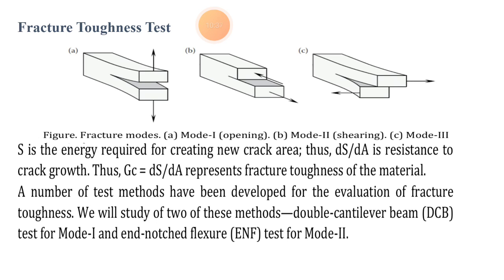We will study two of these methods: the double cantilever beam for Mode 1, and the end-notched flexure test for Mode 2. In this way we have finished the topics of fracture toughness and double cantilever beam techniques, as well as bond strength for ply addition. Thank you friends.